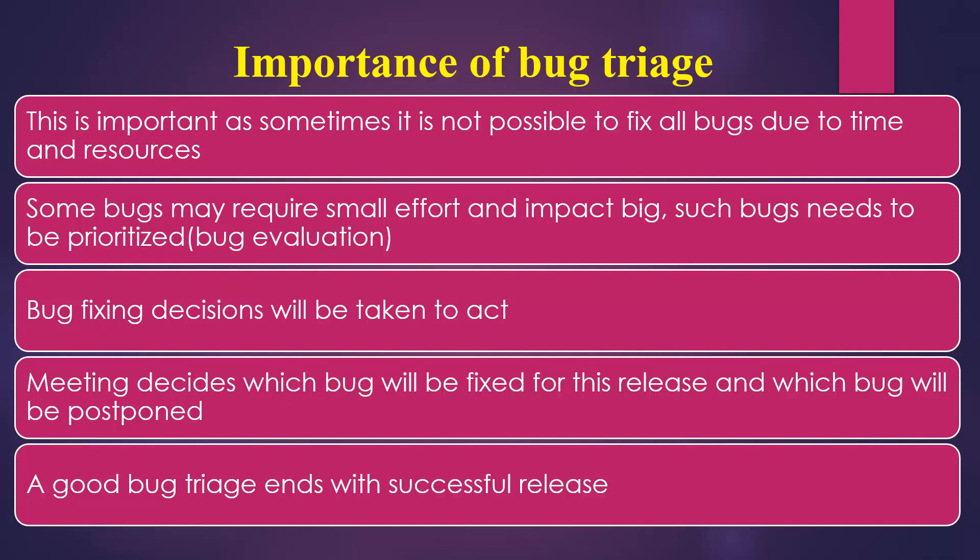Once a decision is taken, the action is also decided: who will fix the bug, how they will fix it, and when. The meeting decides which bugs will be fixed for the current release and which will be postponed. Some bugs — like small alignment or color issues — may not have a big impact. If there aren't enough resources to fix them for this release, they can be moved to the backlog and addressed in the next sprint or release. You can also mention them in the release notes.